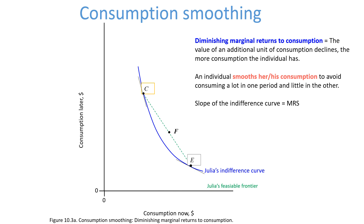Given the choice indicated by the line C–E, Julia would choose point F. Point F is on the highest indifference curve she can reach, and she is smoothing consumption.